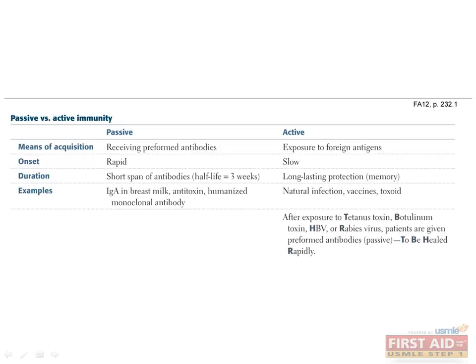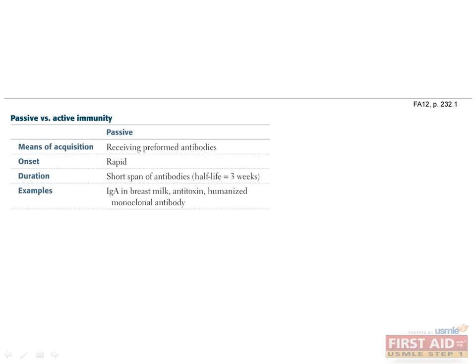While we've already split the immune system into innate and adaptive categories, it can also be divided into passive and active arms. Passive immunity is the quicker of the two to act. It relies on the acquisition of preformed antibodies, such as through breast milk in the newborn, or the injection of antitoxins or humanized monoclonal antibodies. Unfortunately, it has a short half-life of only about three weeks. Physicians make use of this when administering preformed antibodies to treat tetanus, botulism, HBV, and rabies.